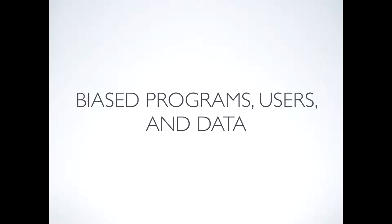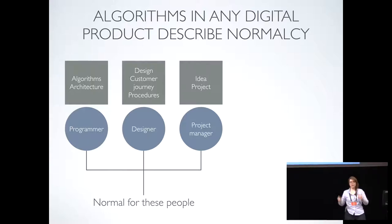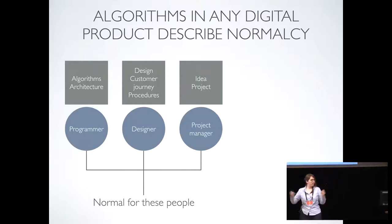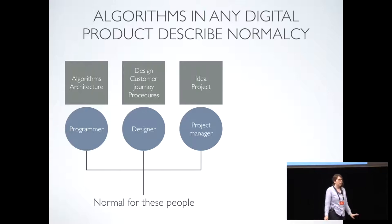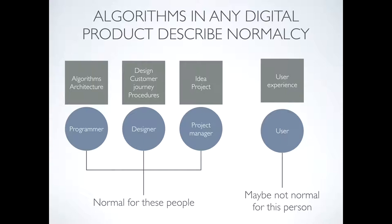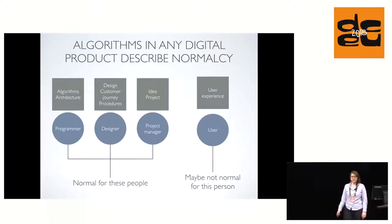What does a biased algorithm look like? Let's think about normalcy. We all have an idea of what is normal — for example, everyone has a last name, or everyone has parents, or everyone lives in a European city where we have 4G everywhere. The problem with this normalcy is that it might not be normal for everyone. We need to keep in mind that our users are far more diverse than any of us on a team. There is even a GitHub repo called 'Things Developers Believe,' listing all the things developers get wrong — including thinking that no one has the last name Null.